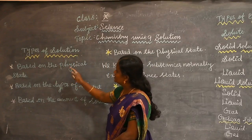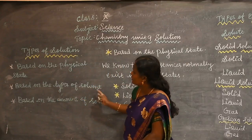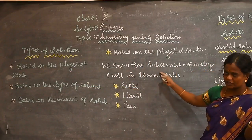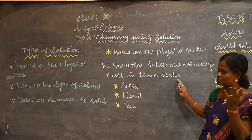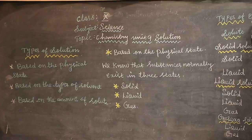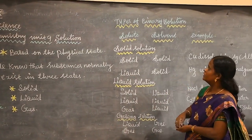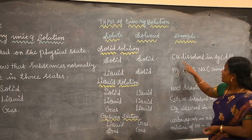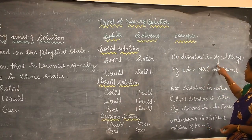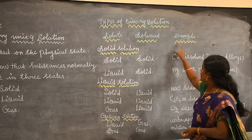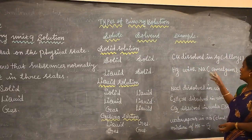Next, let us see types of solutions: based on physical state, based on types of solvent, and based on amount of solute. Based on physical state, substances normally exist in three states: solid, liquid, and gas. For solid solutions: solid in solid — for example, copper dissolved in gold, which is called an alloy. Liquid in solid — for example, mercury with sodium, which is called amalgam.